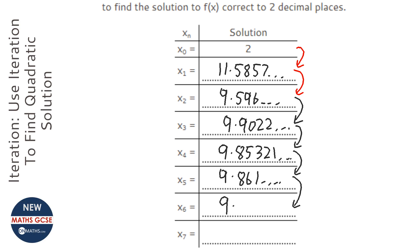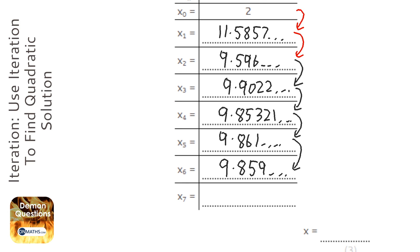Now you might be wondering where we stop. It says it wants two decimal places, so we stop when we get the same rounding. You can see here that both of the last two would round to 9.86, so we could stop now, but I'm just going to go a little bit further to see what happens.